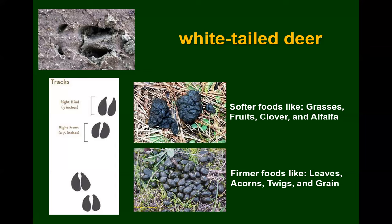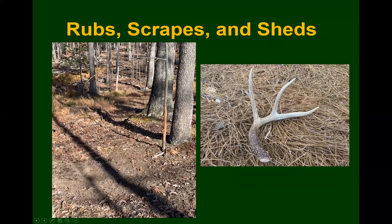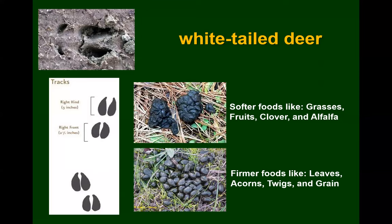Deer scat will be pellet-like when they're eating firmer foods like leaves, acorns, twigs, and grain. Softer foods like grasses, fruits, clovers, and alfalfa will lead to more clumpy piles as opposed to pellets. You'll typically see the clumped piles in spring and summer when they're eating more soft mass, and the pellets in fall and winter when eating more woody browse. Deer are habitat generalists so you'll find their tracks and scat just about anywhere.